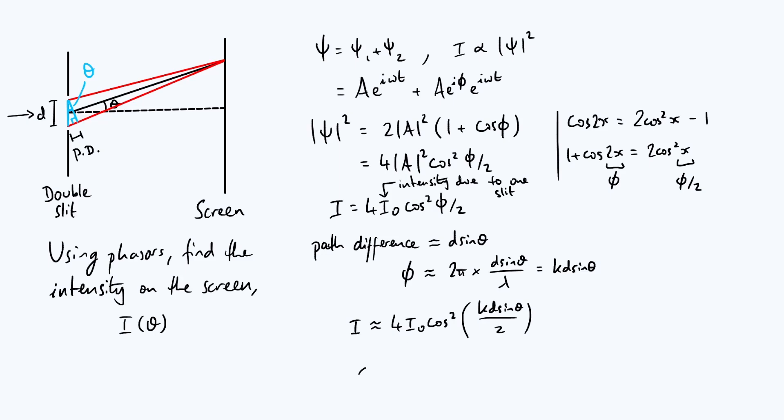Another thing I'll point out is what's the average intensity, the average intensity on the screen. Well, it's approximately equal to four I naught times the average value of the cos squared function, but we just said cos squared oscillates between zero and one. The average value is going to be a half, and so the average intensity is two I naught.